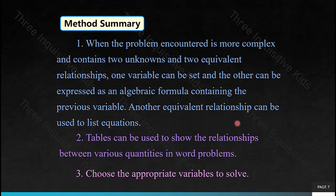Method summary. One: when the problem contains two unknowns in two equivalent relationships, one variable can be set and the other unknown can be expressed as an algebraic formula containing that variable. Another equivalent relationship can then be used to list equations. Two: tables can be used to show the relationships between various quantities in word problems. When you have many different pieces of information, tables are a very useful tool for analyzing word problems and identifying which value corresponds to what.